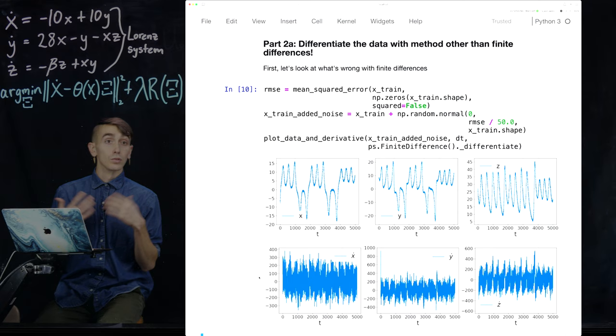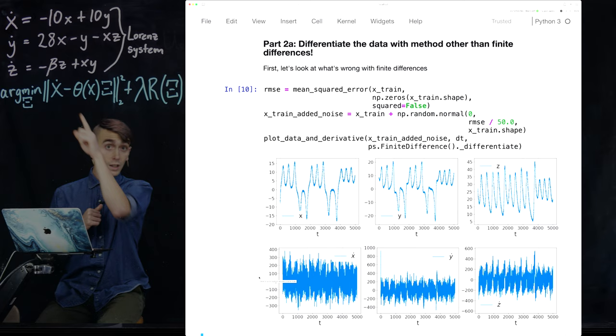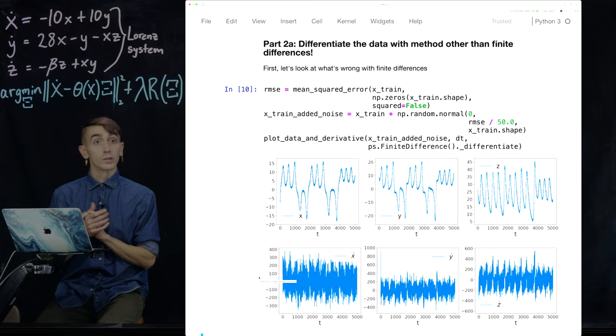And that's problematic because the sparse regression problem we're solving is fitting x dot. So this noisy data is going to screw up our sparse regression problem. So how do you fix this?